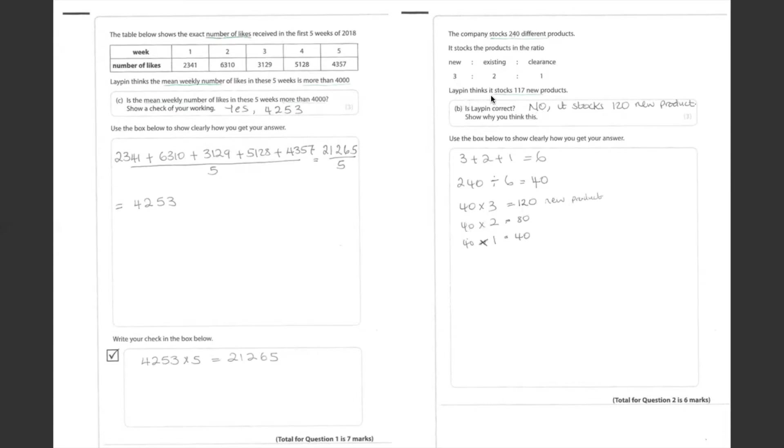Lapin thinks it stocks 170 new products. From our answer here, we can see that he stocks 120. So, Lapin is not right.